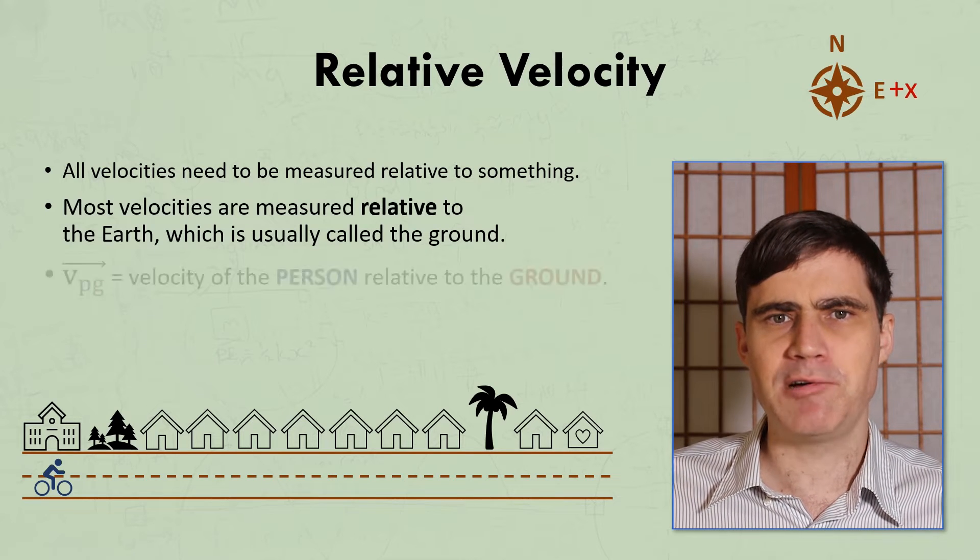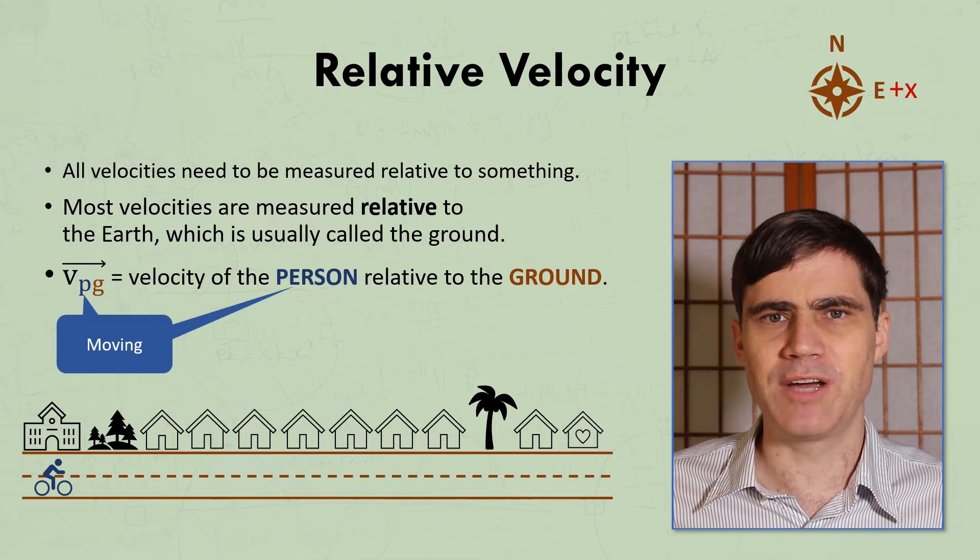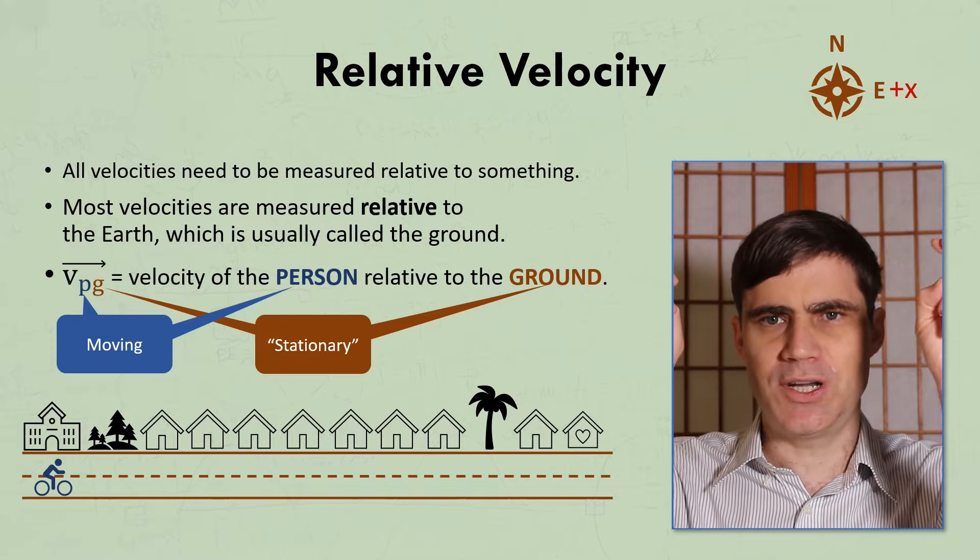This notation is very important in physics. The first letter represents the object which is moving, and the second letter represents what it's moving relative to, which we can usually think of as stationary.